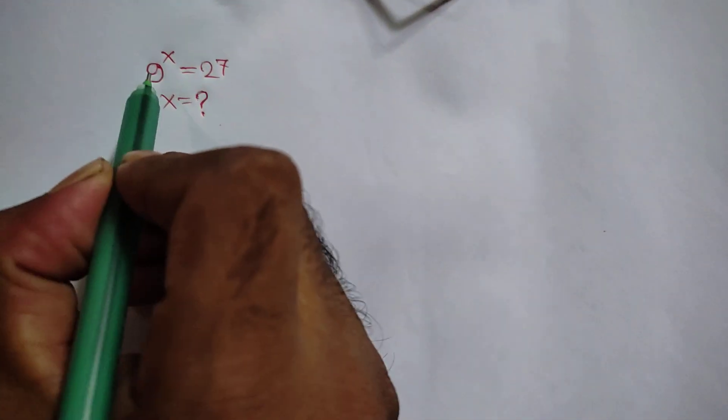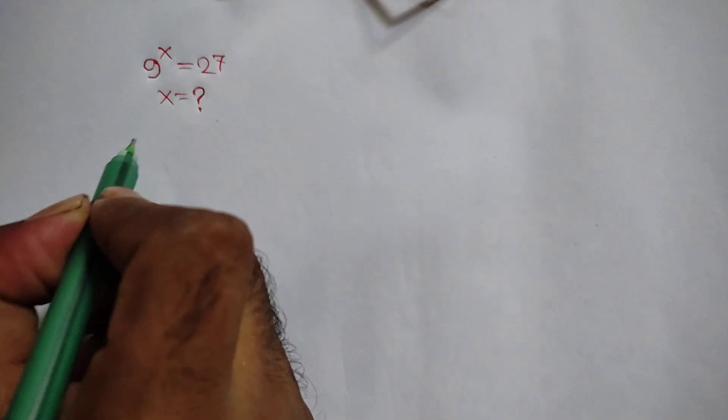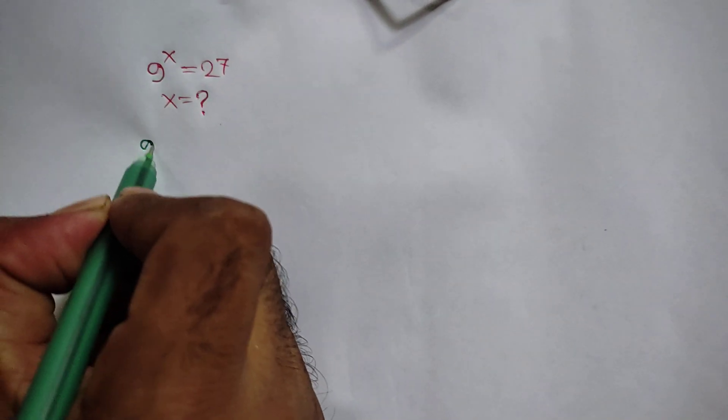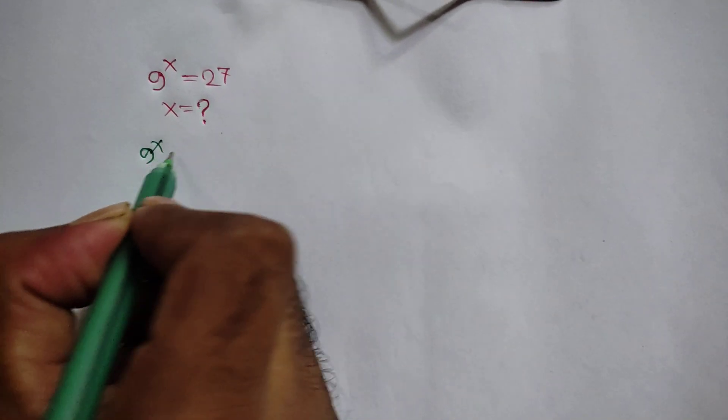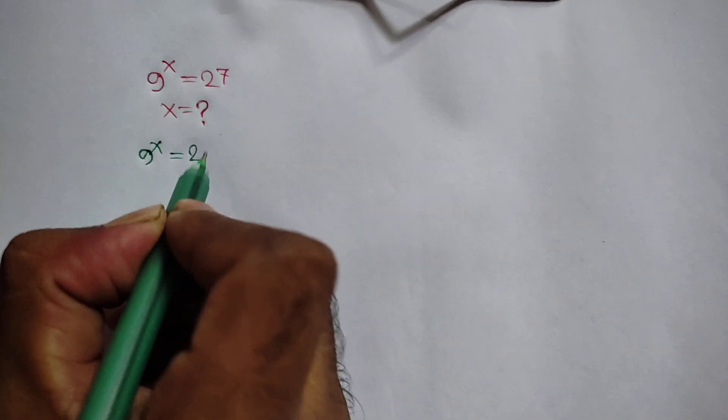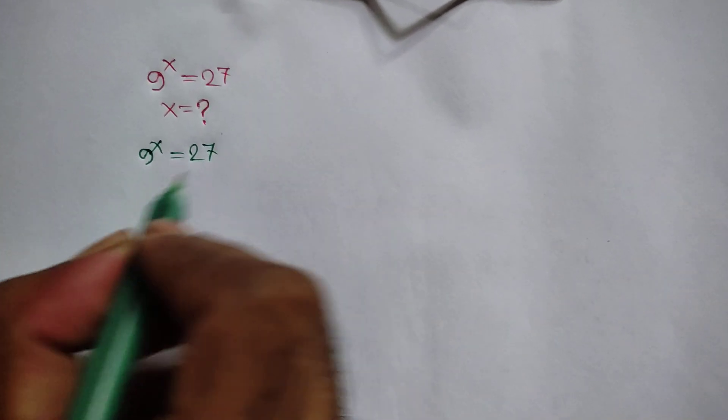Hi everyone. In this video I am going to show how to find the value of x where 9 to the power x is equal to 27. We have given 9 to the power x is equal to 27.